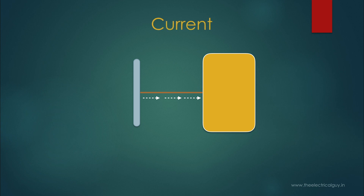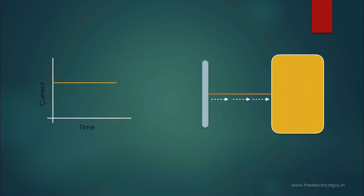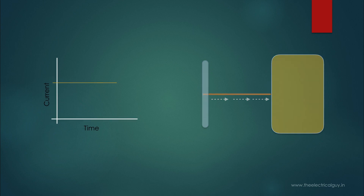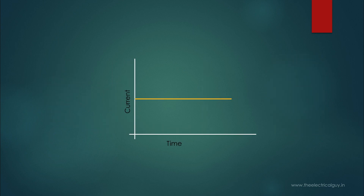Now, if I draw a graphical representation of such type of current with respect to time, it will look like this. If you observe this graph carefully, you will find that the amount of current and direction of current is constant throughout the time. And this type of current, in which magnitude and direction does not change with the change in time, is called direct current.